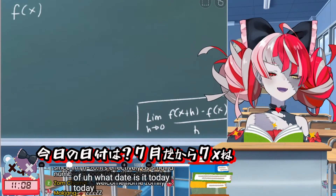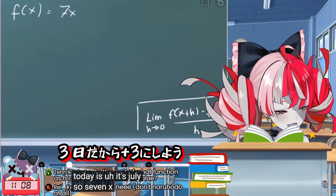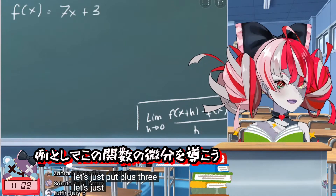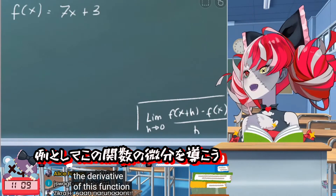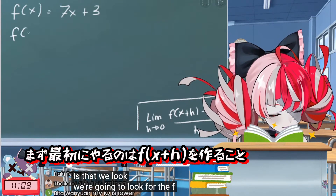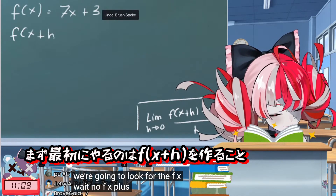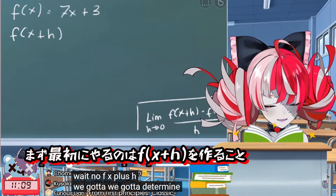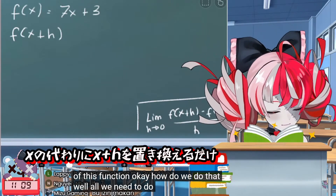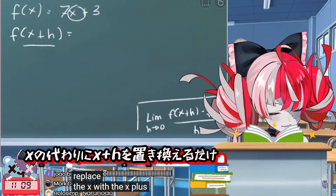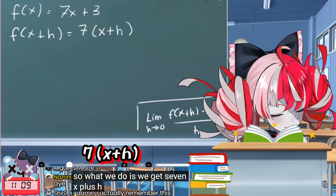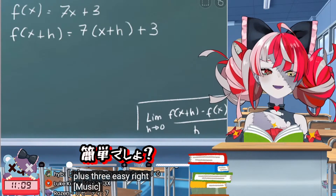What date is it today? Today is July — so 7x. And the date is the 3rd of July, so let's just put plus 3. Let's say that we're looking for the derivative of this function. Now the first thing we want to do is look for f(x+h). We gotta determine the function plus H. All we need to do is replace the X with X plus H. So what we get is 7(x+h) plus 3. Easy, right? Do you guys get it? Very, very easy.